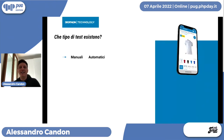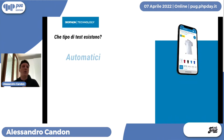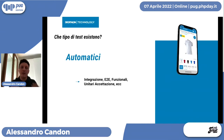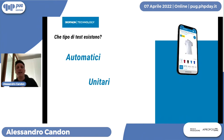Parliamo dei test in generale. Esistono test manuali e test automatici. I test manuali sono quelli che facciamo aprendo il browser o facendo una chiamata con Postman. I test automatici sono quelli eseguiti da un sistema di testing automatico. Ci focalizzeremo sui test automatici e in particolare sui test unitari, che testano la parte più atomica e piccola del codice e sono i più veloci da eseguire.